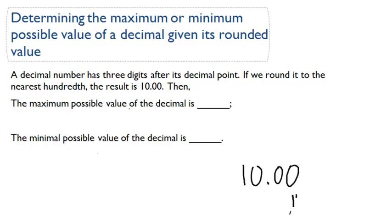We rounded it to the hundredth place. Now, question: what is the maximum possible value of the decimal that we started with? The maximum possible value - it had three decimal digits.